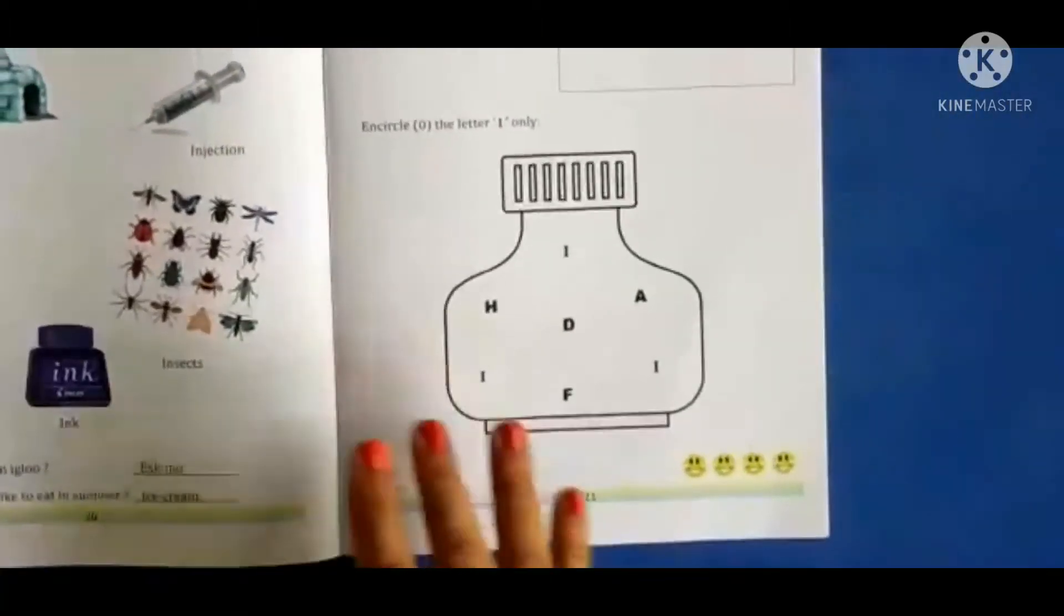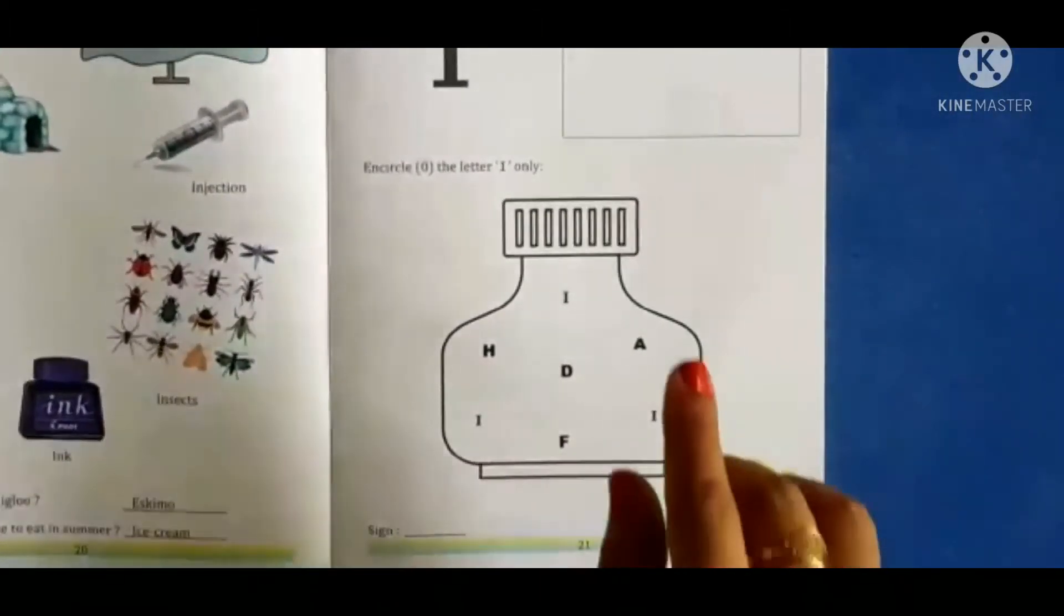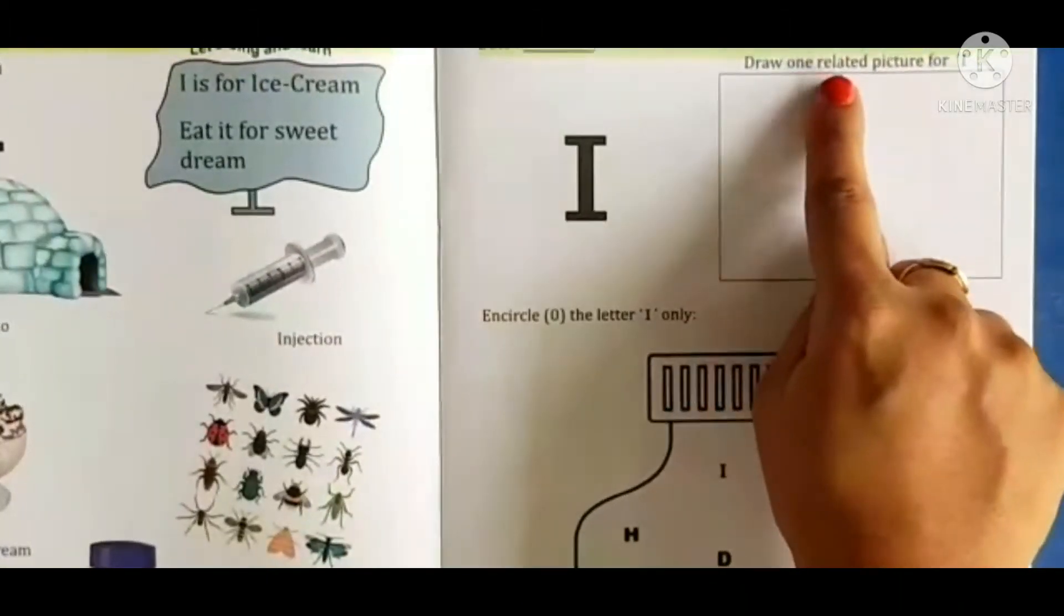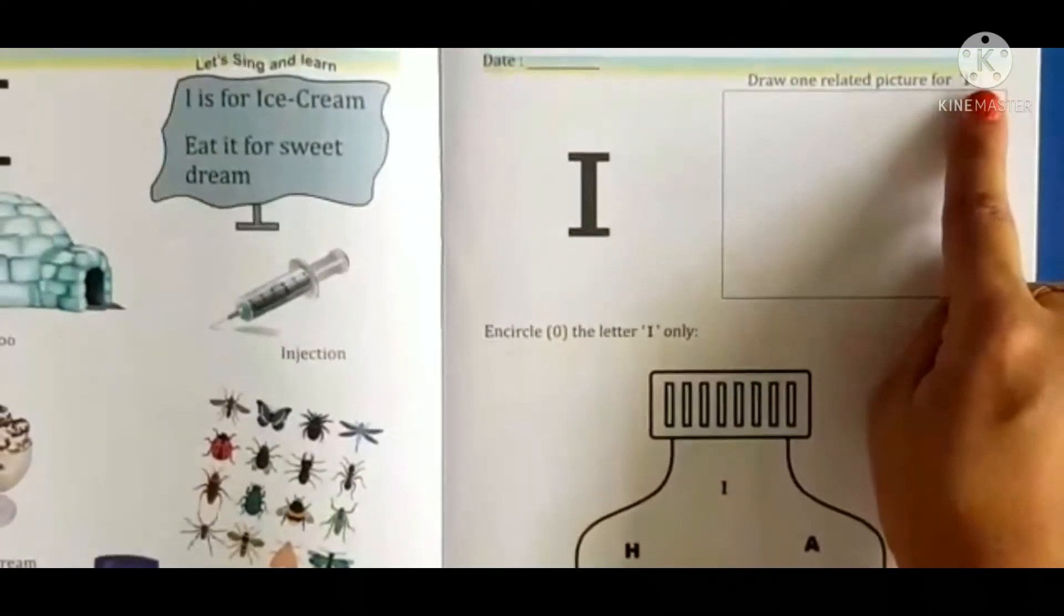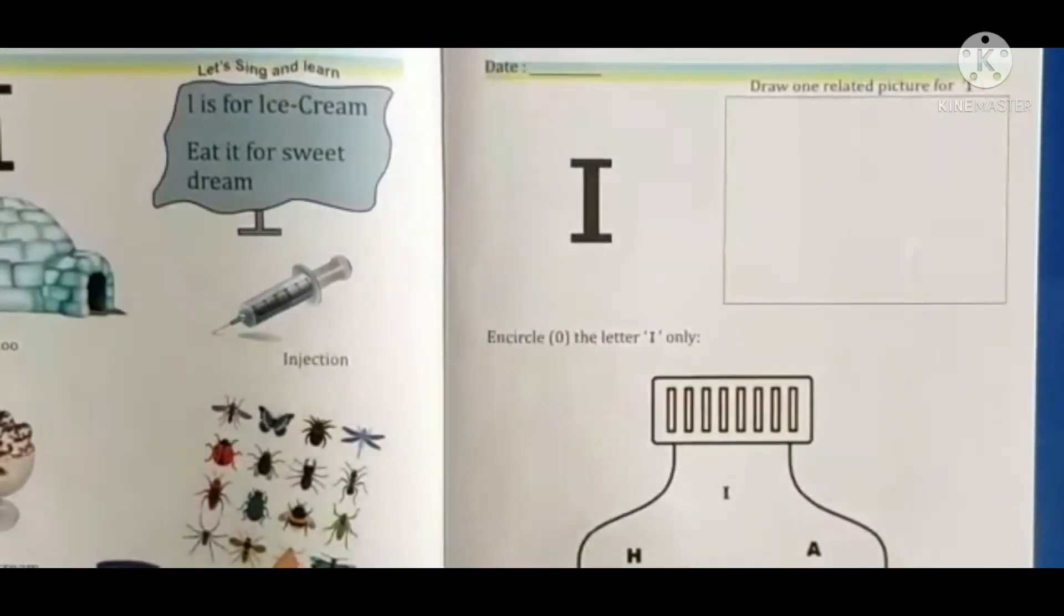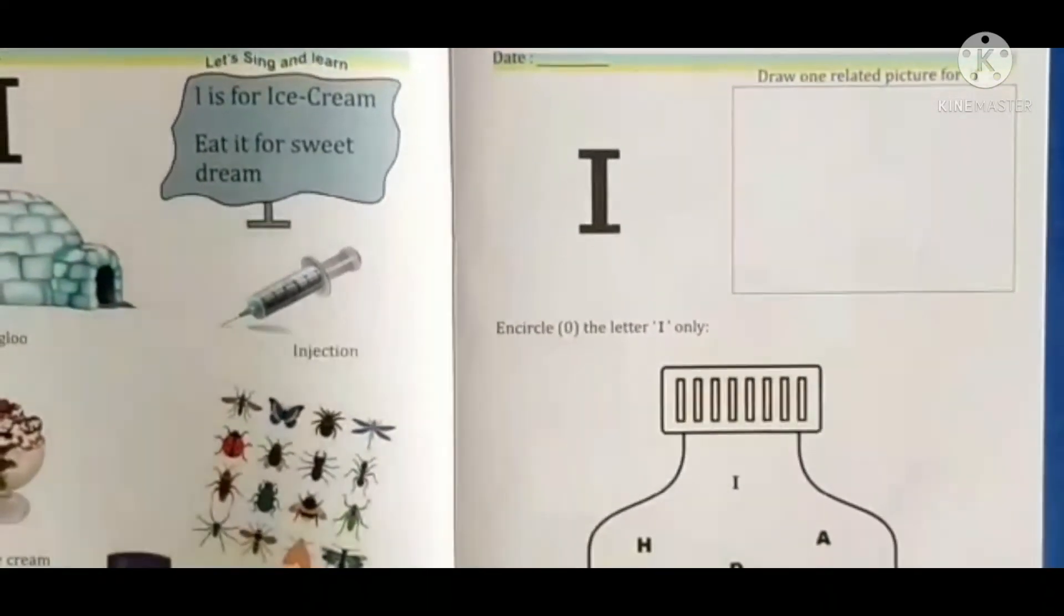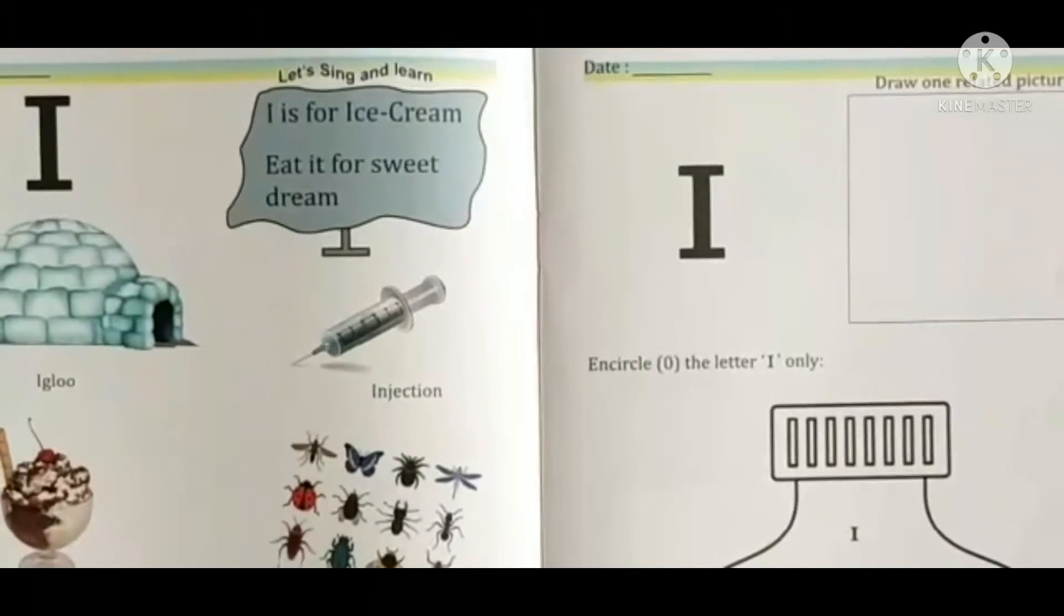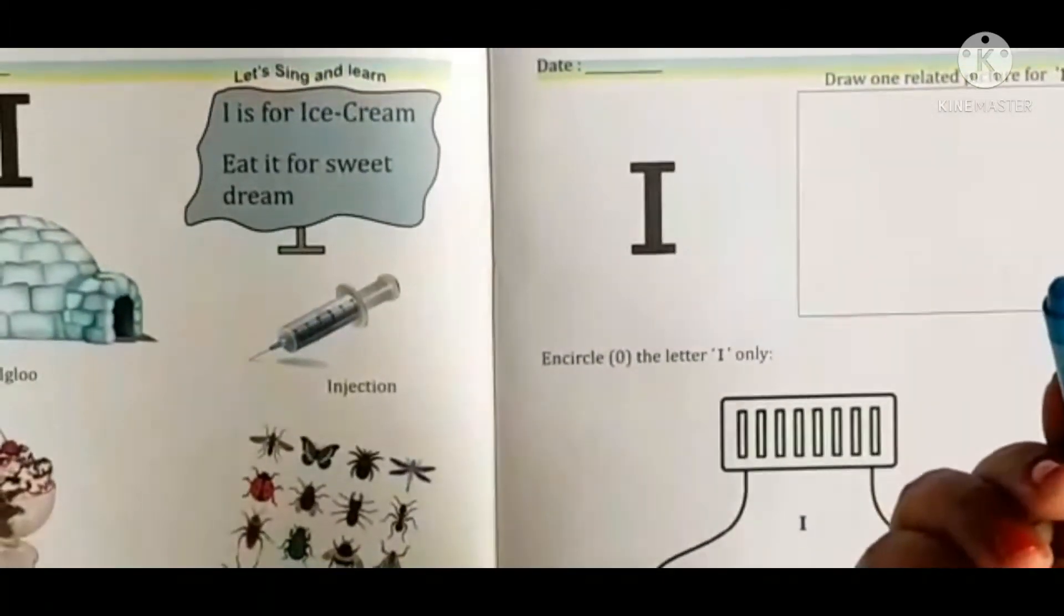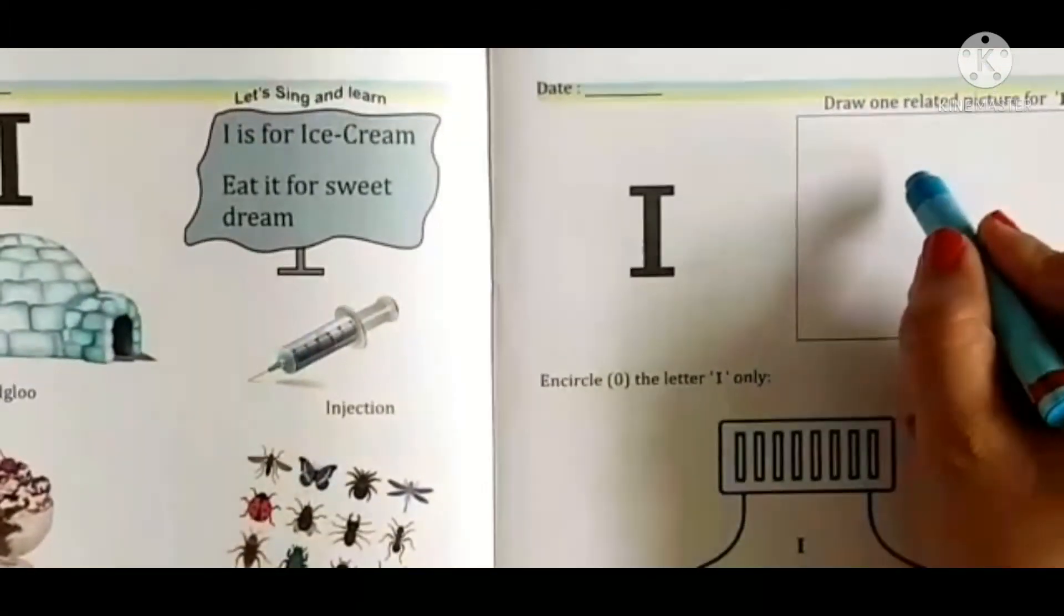Now let's see what is the activity on the next page. Draw one related picture for I. I se humein ek picture draw karni hai and we will draw ice cube. Thanda thanda ek ice cube draw karenge.